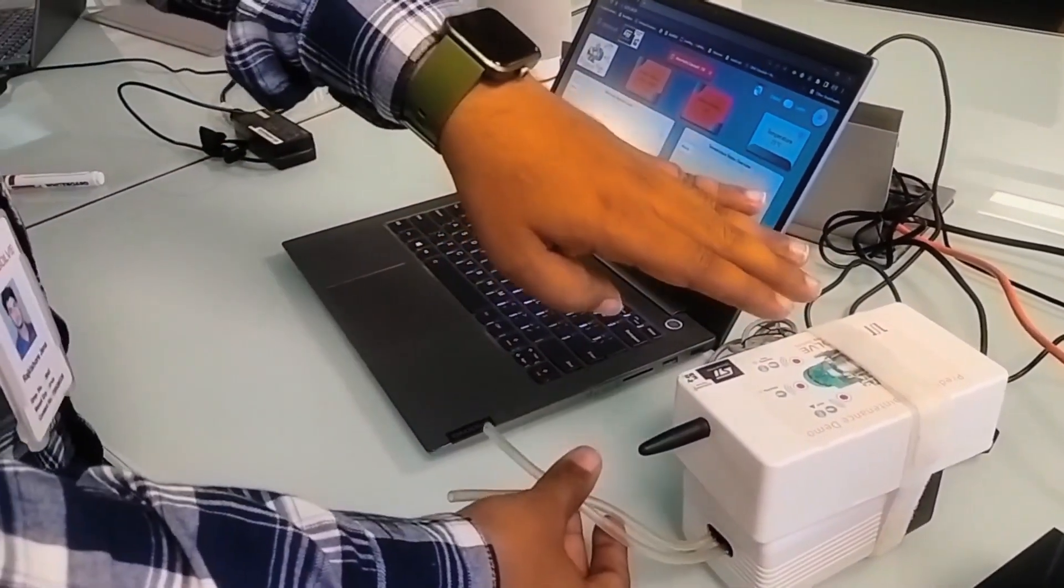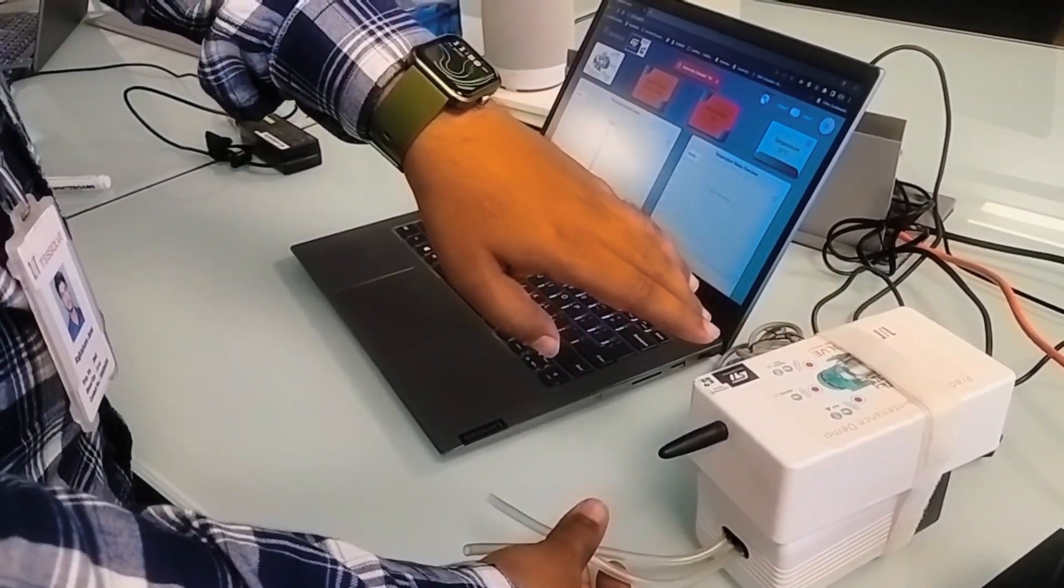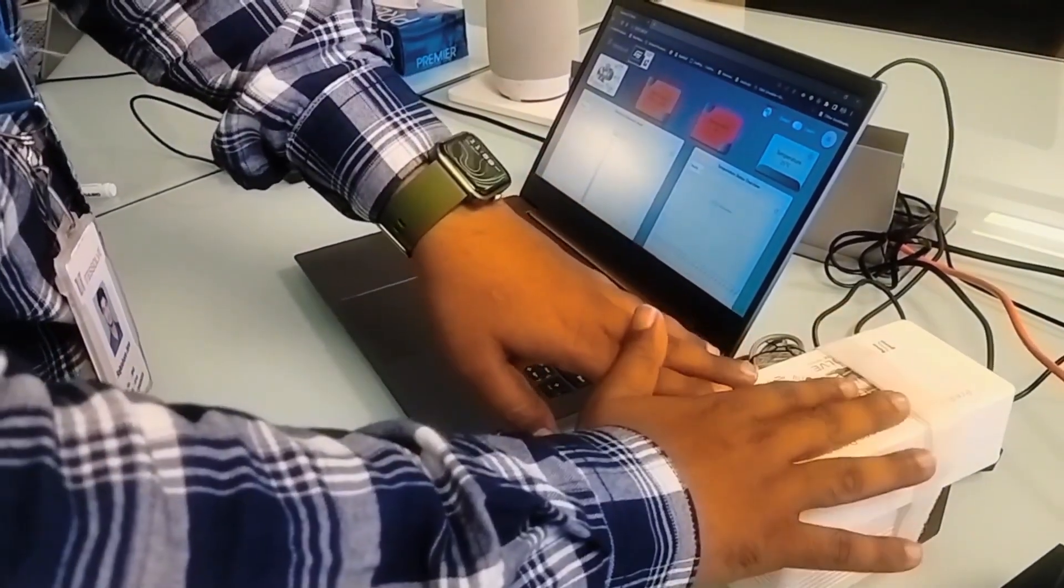For this abnormality test, I will just block these pipes, and it will detect the abnormality.